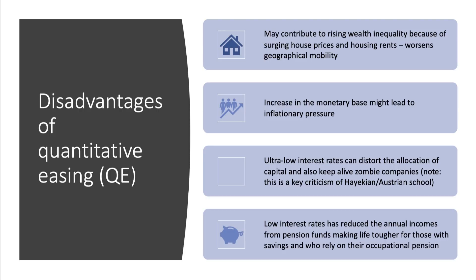What about the other side of the argument? Here are four disadvantages. The first is that QE is widely regarded as having contributed to an increase in wealth inequality, because the low interest rates and the increased money circulating in the economy — a lot of that has gone into equities, but a lot has also gone into property speculation, increasing house prices as well as the cost of renting. So QE may well have made geographical mobility of labour and housing affordability issues more acute. Second, in theory, if you increase the money supply there's always a threat that could lead to higher inflation in the years ahead.